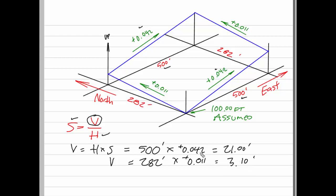So we can simply say that from 100 we are rising by 3.10 feet right here, 3.10 feet to there. Along the south edge we are rising by 21 feet. This elevation at this location will be 121 and this elevation here will be 103.10.